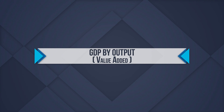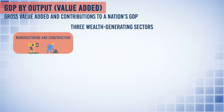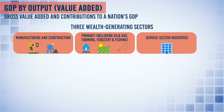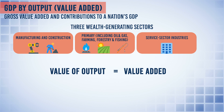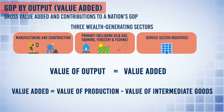The third type is GDP by output — gross value added and contributions to a nation's GDP. There are three main wealth-generating sectors in an economy: manufacturing and construction; primary, which includes oil and gas, farming, forestry, and fishing; and a wide range of service sector industries. This measure of GDP adds together the value of output produced by each productive sector using the concept of value added. Value added is the increase in the value of goods and services as a result of the production process, equal to value of production minus value of intermediate goods.